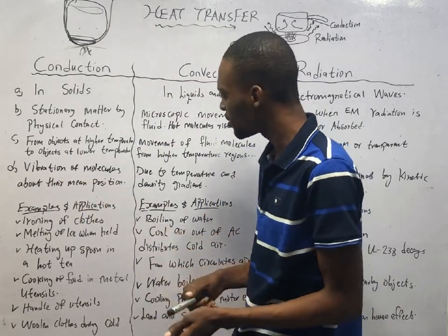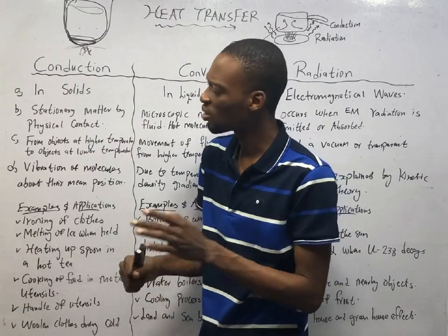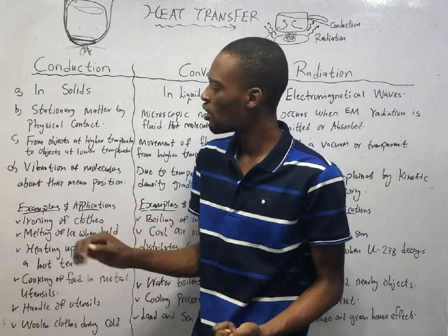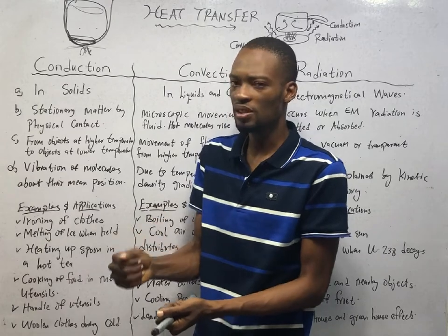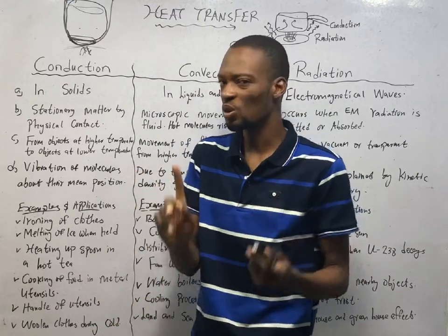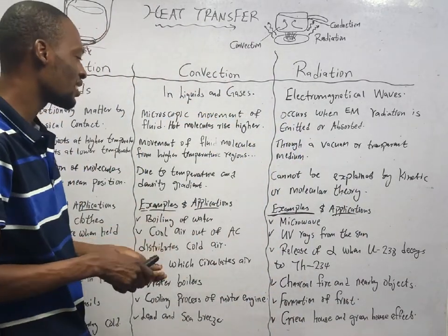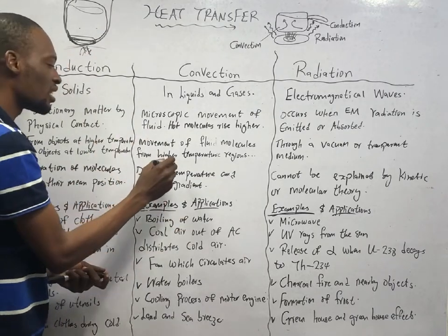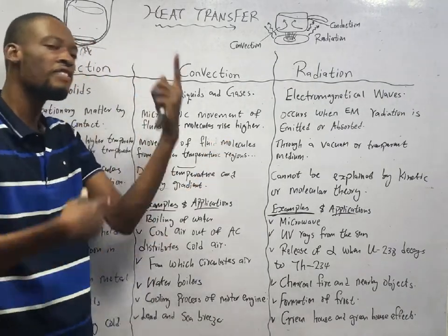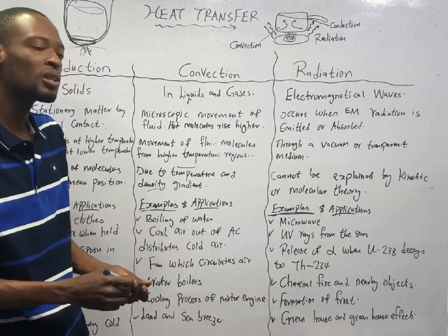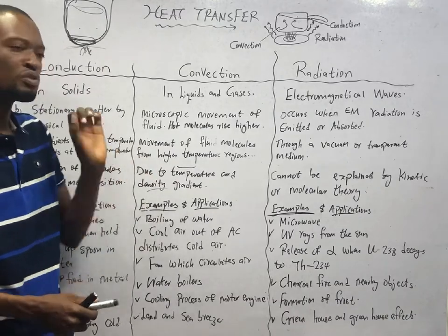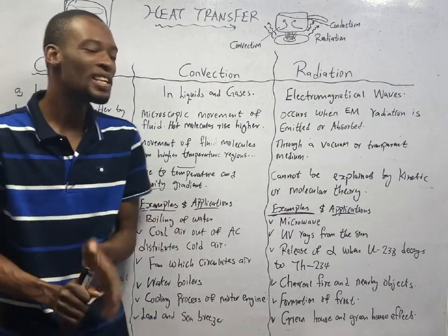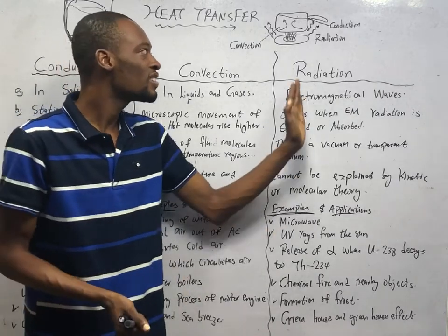In conduction, there is vibration of molecules about their mean position — the physical object doesn't move, but the molecules vibrate in place. Convection happens due to temperature and density gradient: as the water below gets hotter, density reduces, causing convection current. Radiation cannot be explained by the kinetic or molecular theory, unlike conduction and convection, which involve movement of particles. So if asked which method of heat transfer cannot be explained by kinetic or molecular theory, the answer is radiation.